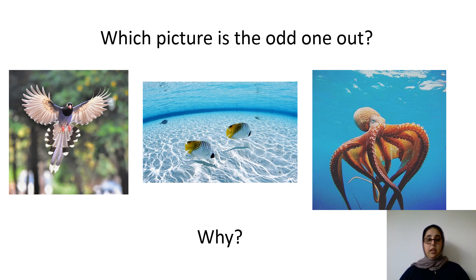Well done everyone. I would say that the bird is the odd one out because the octopus and the fish live in the ocean, so their habitats are different. Did you have any other different answers? Write it down in your exercise books and take a picture and send it over to me.